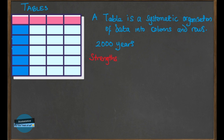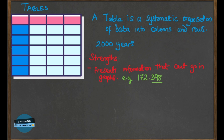One of the main strengths of a table is that it can accurately present information that cannot be presented even with a graph. For example, if you want to present a number like 172.398, this can be accurately expressed in a table — but how do you represent 0.398 on a graph? There are different kinds of data that cannot be presented in graphical format, and the tabular format is the best way because you can put the exact amount of information, whereas a graph might only show an approximate value.